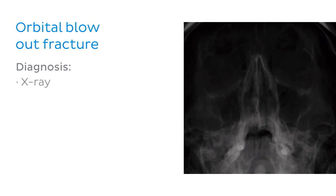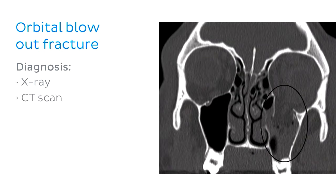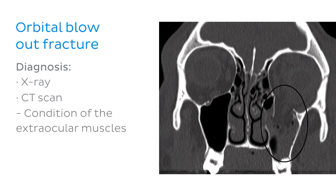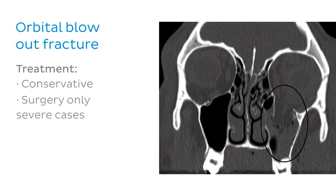Orbital blowout fractures can be diagnosed using X-ray; however, a CT scan is the modality of choice if possible, as it allows not just for evaluation of bone-related injury, but also intraorbital hemorrhage, globe injury or rupture, condition of the extraocular muscles, and indications of prolapsed orbital fat. In general, treatment of orbital fractures tends to be conservative, with surgery or reconstruction reserved for more serious cases where a risk of impairment of ocular structures is present. When surgery is required, it is often delayed to allow for better evaluation of damage once the initial swelling has subsided.